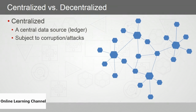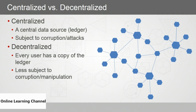Changing that single ledger affects everyone connected to it. In a decentralized scenario like blockchain, every user has a copy of the ledger. It's read from — and it doesn't matter which one, because they're all the same — and it's written to only if the majority of users agree. The decentralized ledger is less subject to risk of corruption or manipulation, and altering it for malicious reasons is a virtual impossibility — though not an absolute one.